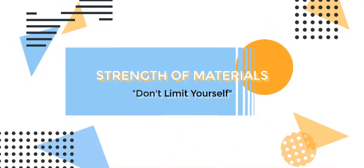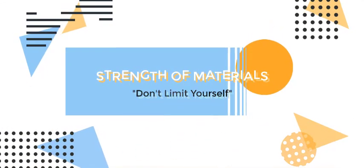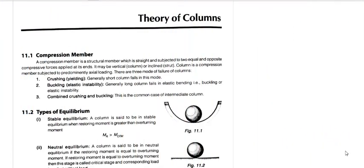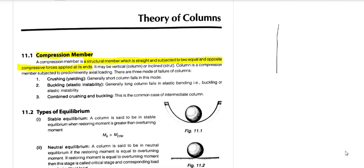Hello everyone. Today we will be discussing about columns. Columns are compression members — a structural member which is straight and subjected to equal and opposite compressive forces applied at its ends. This member is compressive; for example, a vertical member is a column.